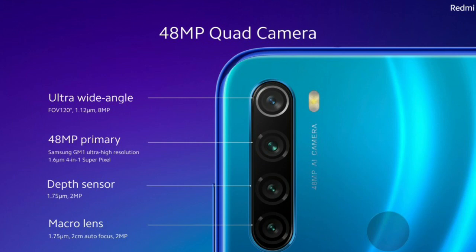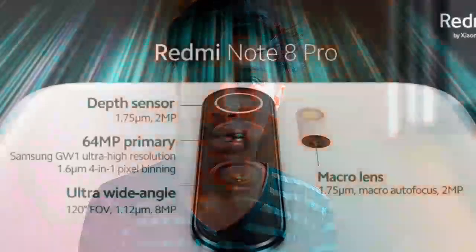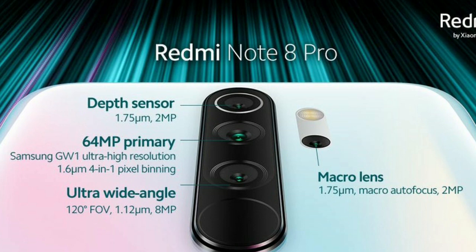For the Redmi Note 8, you can use the Snapdragon 665, with an 8MP ultra-wide lens, 2MP macro lens, and 2MP depth sensor. The Note 8 Pro has a 64MP main lens, 8MP ultra-wide lens, 2MP micro lens, and 2MP depth sensor.